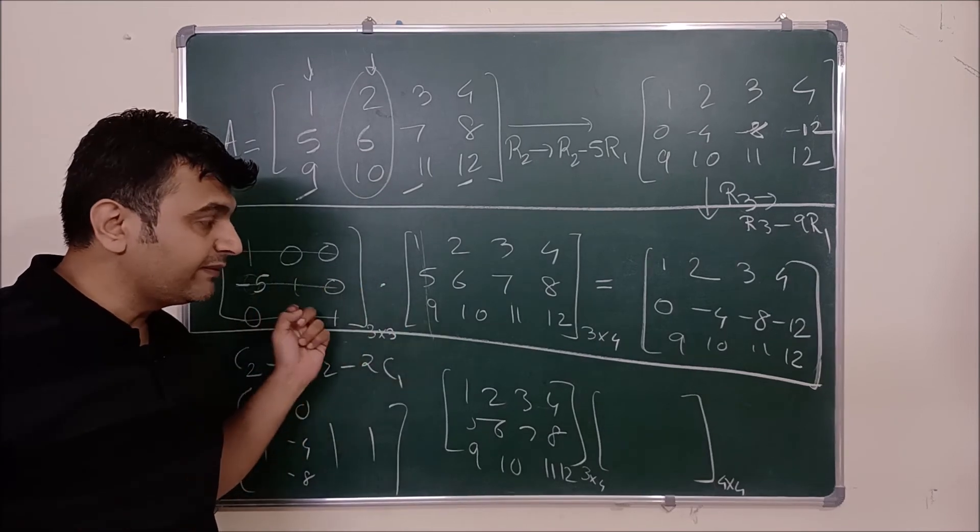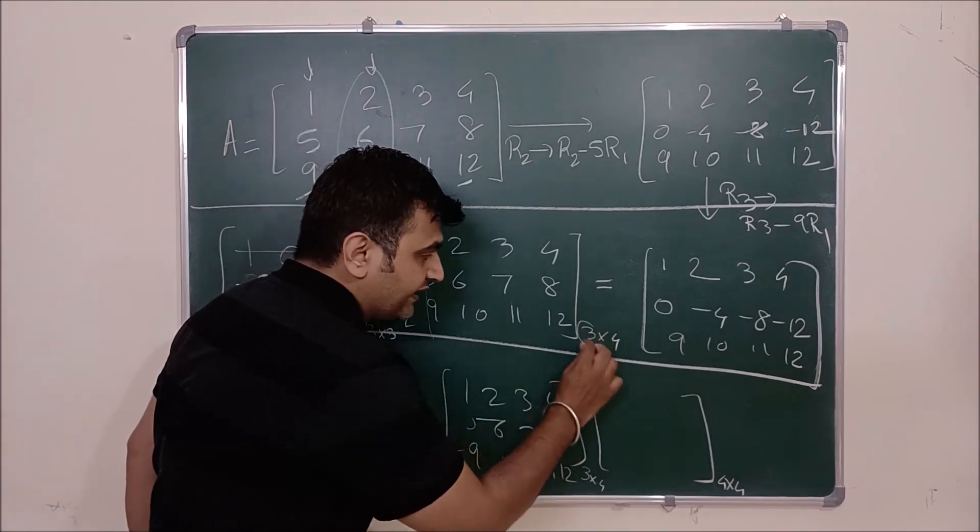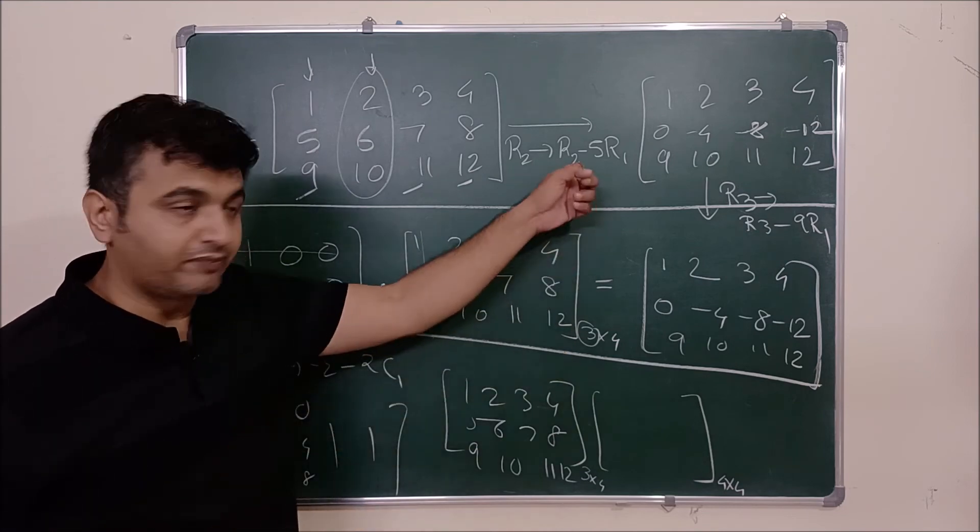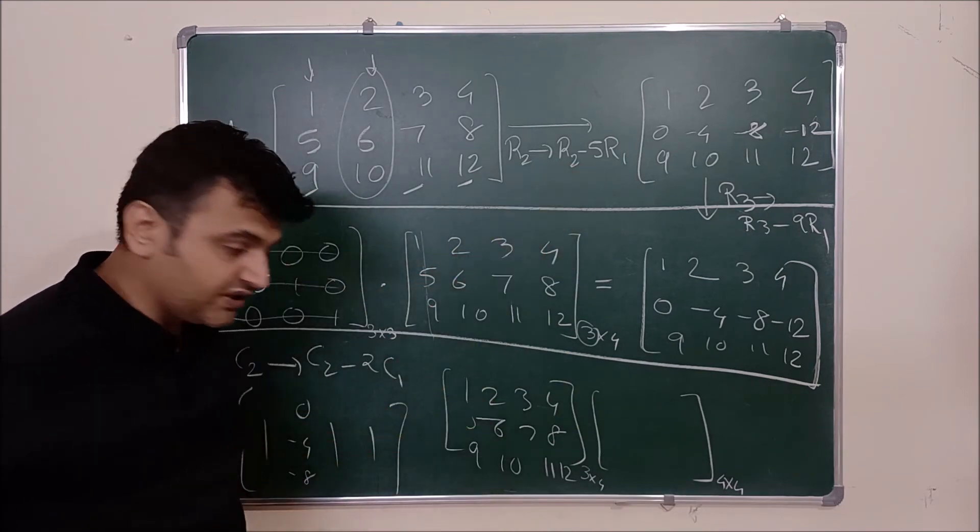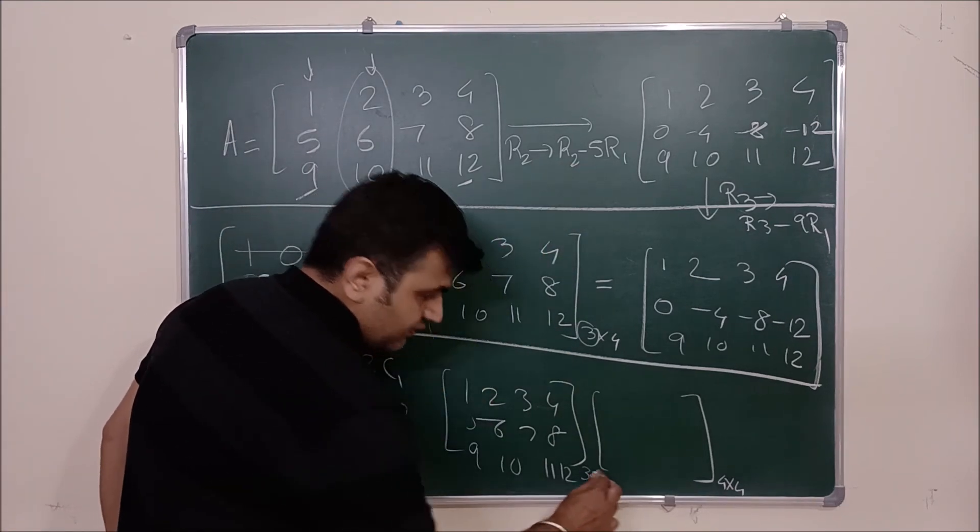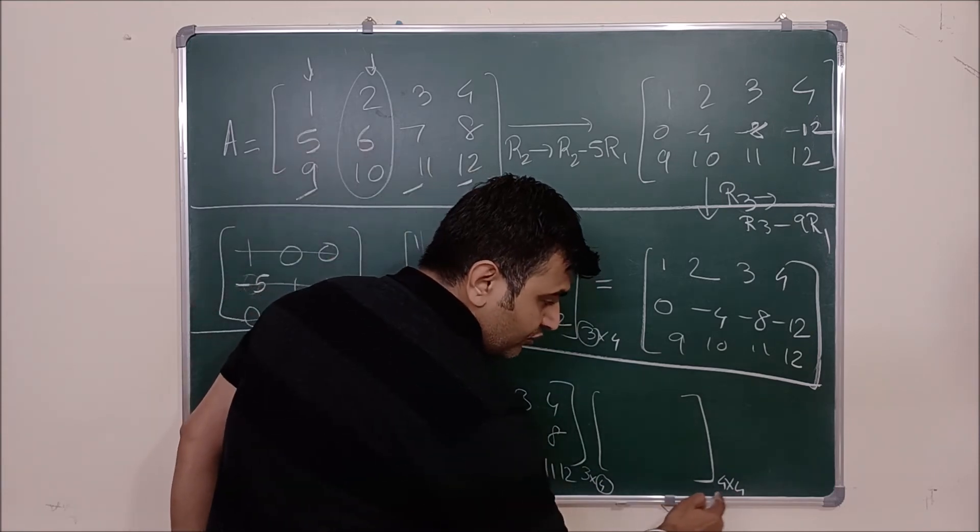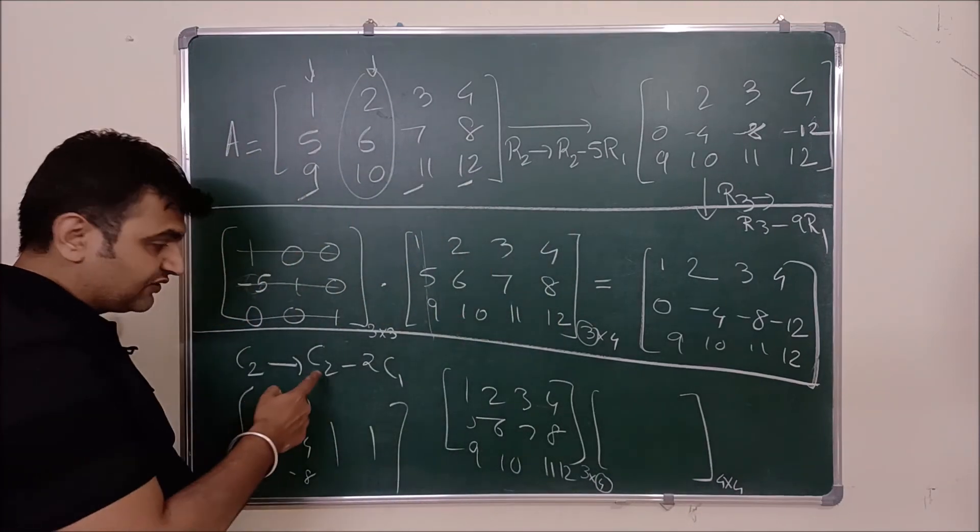For pre-multiplication you take identity matrix of order 3 cross 3 and then you apply the row operation. For column operation you see number of columns. So take an identity matrix of order 4 cross 4 and then apply this column operation.